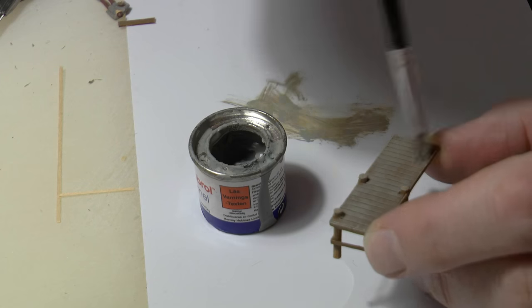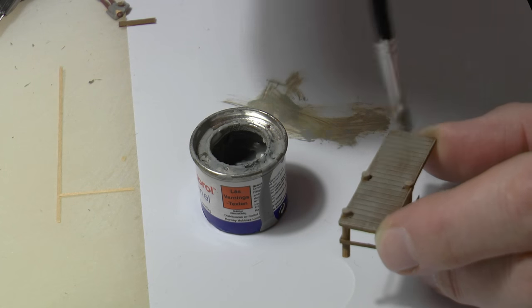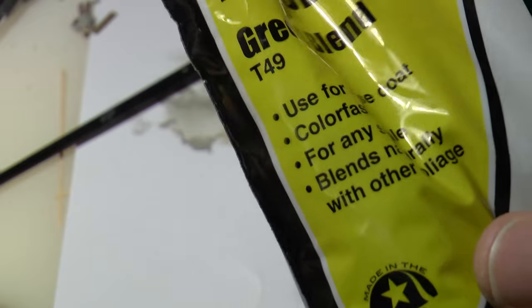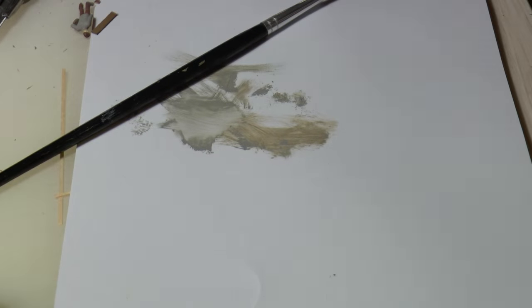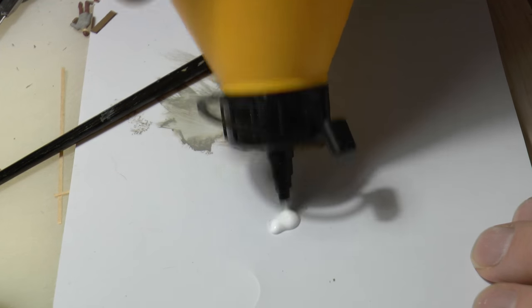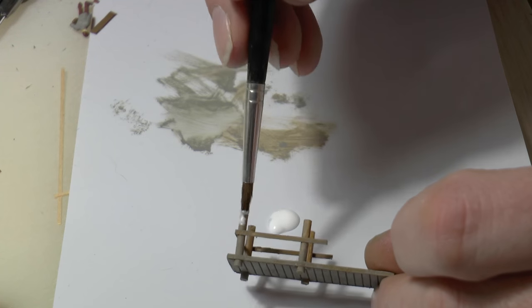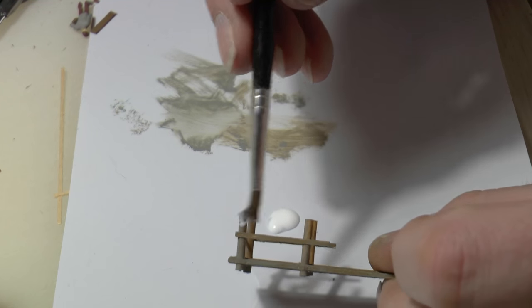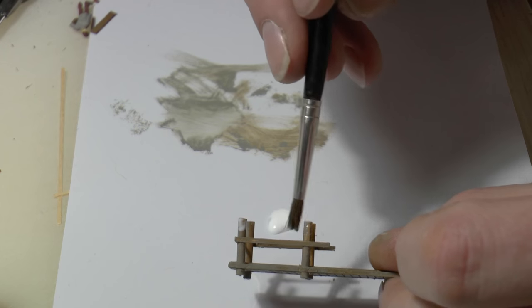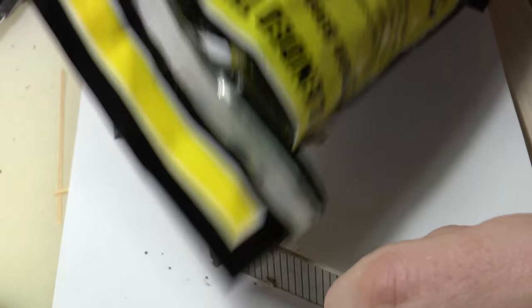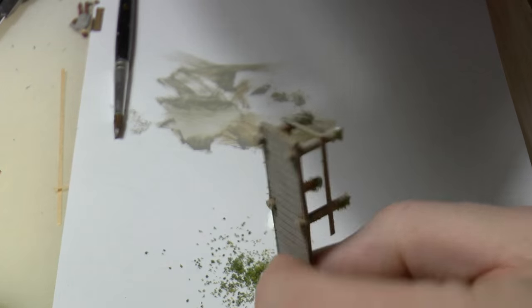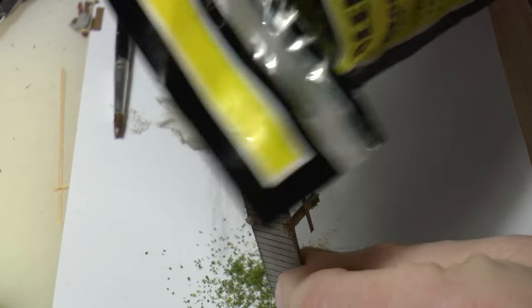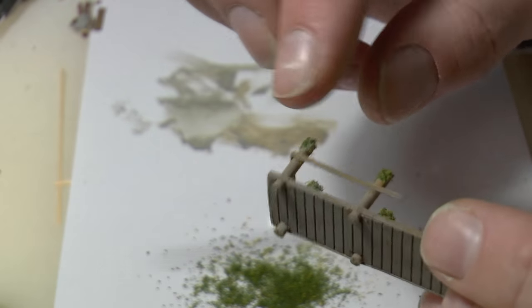So now it's time for some turf. This is green blend T49 Woodland Scenic, and I will use that together with ordinary wood glue to simulate the seaweed or possibly moss that typically grows in the bottom part closest to the water surface. I put it around the beams and I gently press the turf into the glue like this.